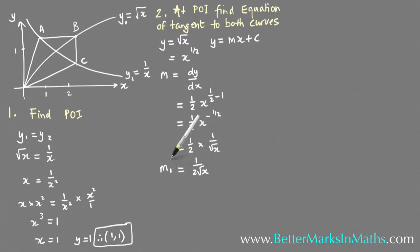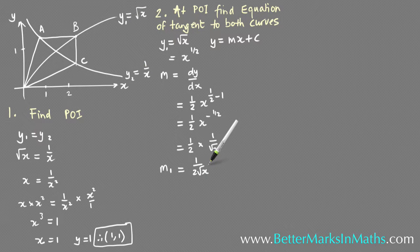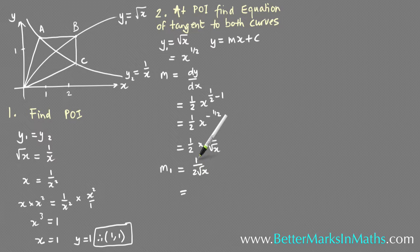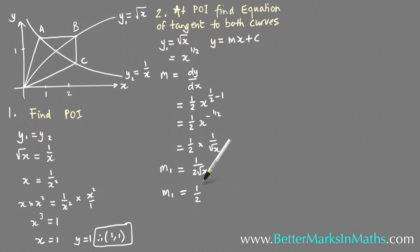Calling this m1, the gradient of the first equation: at the point x equals 1, substitute into 1 on 2√x to get 1 on 2 times the square root of 1, which is 1 on 2 times 1, so m1 equals one half.